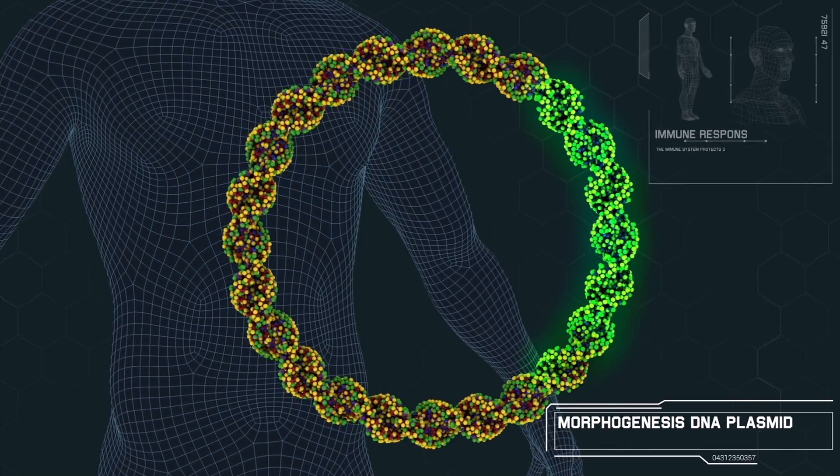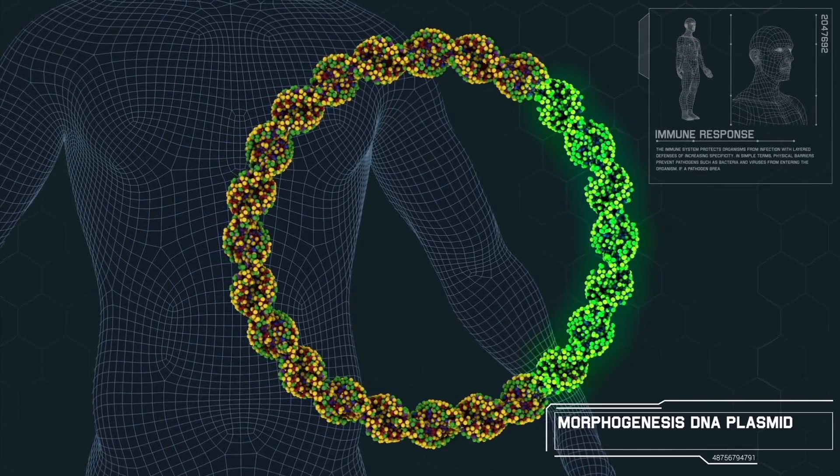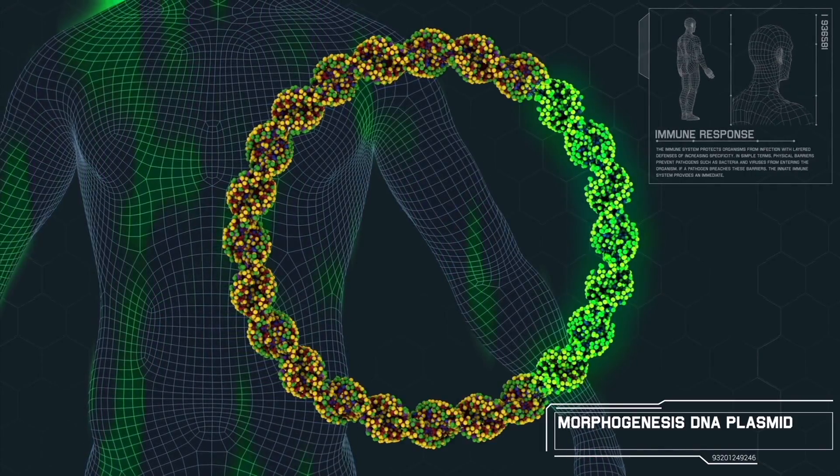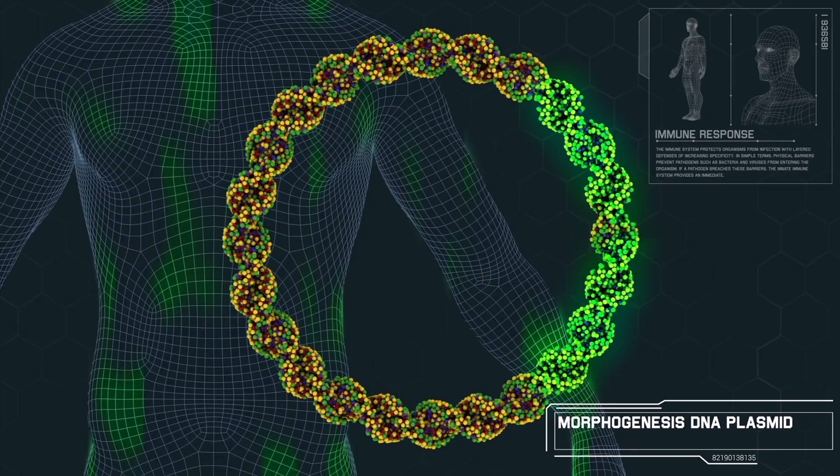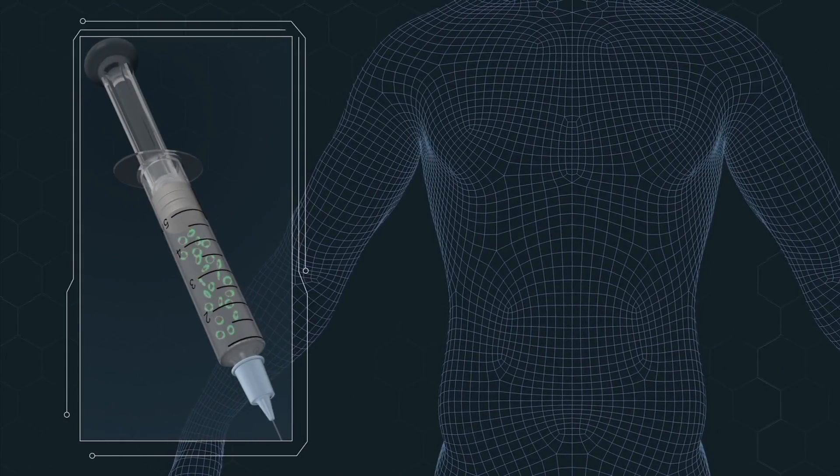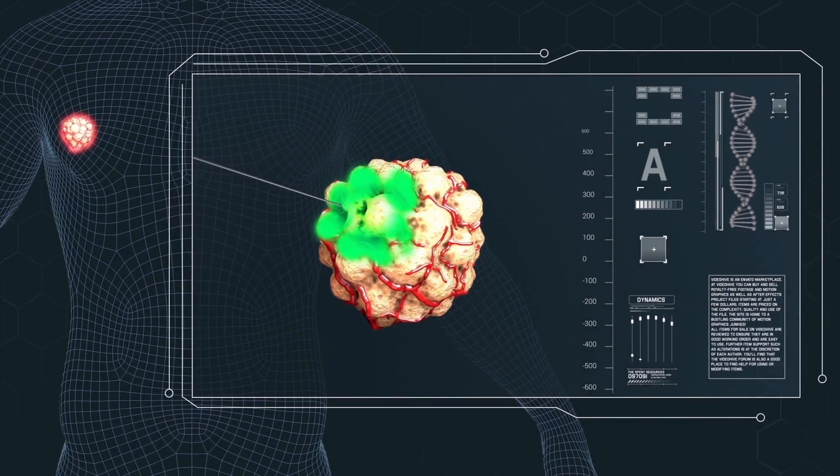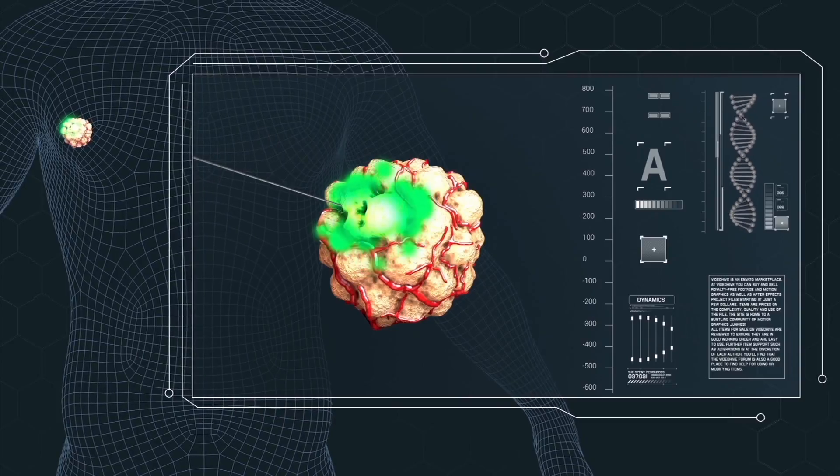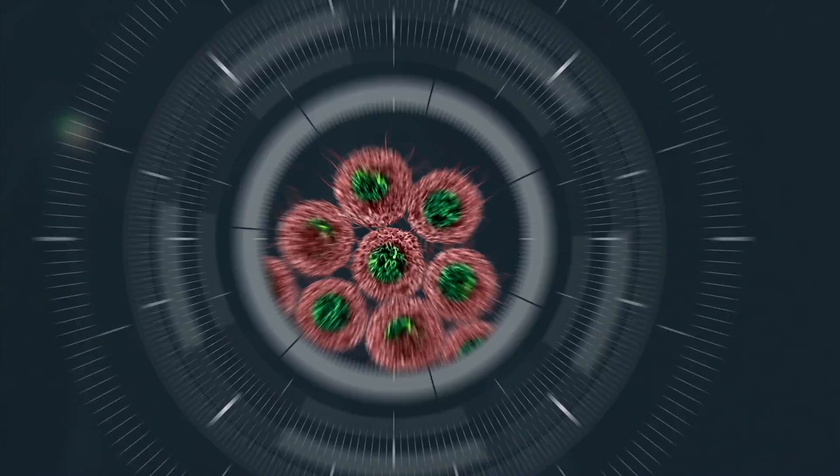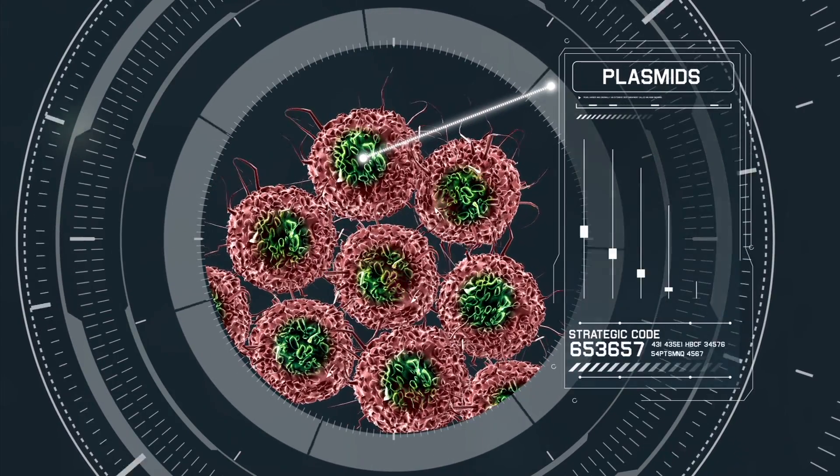This new plasmid now contains the strategic set of instructions that will carry out the Morphogenesis mission to activate the immune system to recognize and destroy cancer cells. Millions of our gene-loaded plasmids are deployed through a simple injection into the cancerous lesion or tumor. Some of the tumor cells absorb the plasmid. The plasmids are transported to the nucleus of those cancer cells and pass along this strategic code.